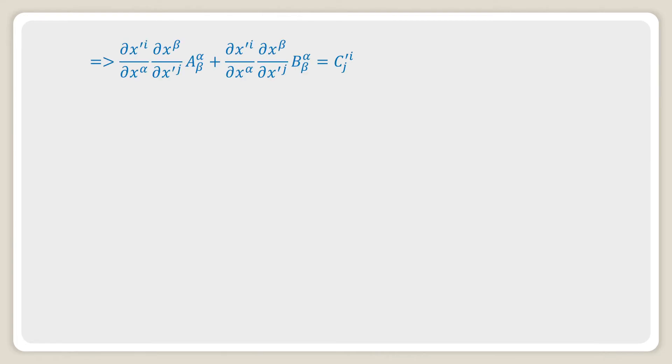Now from this equation we can take common (∂x'^i/∂x^α)(∂x^β/∂x'^j) from both terms. Then you will get (A^α_β plus B^α_β)(∂x'^i/∂x^α)(∂x^β/∂x'^j) equals C'^i_j.